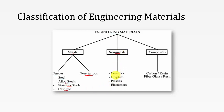A few examples of non-metals are ceramics, graphite, plastics, and elastomers. Finally, composites — composites means two or more materials are combined together to form a new material. The materials have different physical and chemical properties. Examples include carbon and resin, and fiberglass and resin.